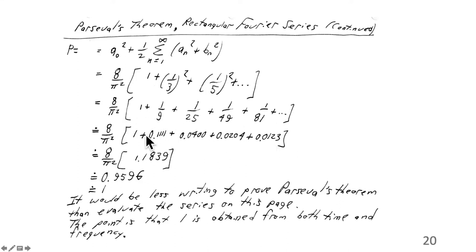I've just evaluated this with a calculator to get these numbers and added them up to get 1.189, and multiplied by 8 pi squared over 2, and you get 0.9596. The more terms you would add here, the closer you would get to 1. This is not a mathematical proof. I'm trying to demonstrate that Parseval's theorem gives you 1 in the time domain and gives you 1 in the frequency domain. But the point is that 1 is obtained from both the time domain and the frequency domain.